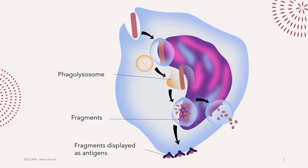I want to start with phagocytosis again to tether what I taught in the previous episode. Phagocytosis is extremely common in the innate immune response. It is usually conducted by antigen-presenting cells such as macrophages or dendritic cells. You have attachment of microorganisms, then ingestion, then killing through the formation of a phagosome, and then degradation of the target microbes. A key event is fragments of the pathogen being displayed as antigens — this is what transitions the innate into the adaptive immunity.